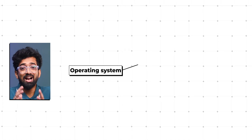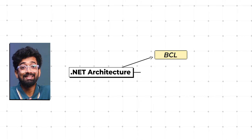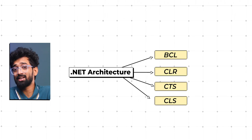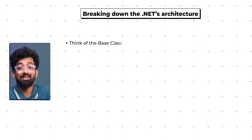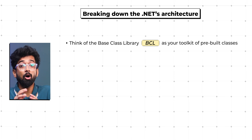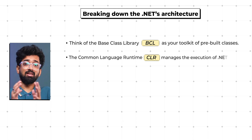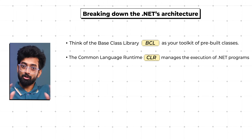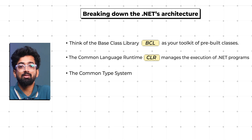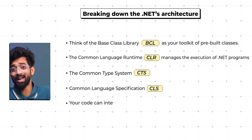Not being limited to just one operating system brings flexibility and reach. Now, breaking down the .NET architecture: think of the Base Class Library (BCL) as your toolkit of pre-built classes. The Common Language Runtime (CLR) manages the execution of .NET programs, making sure everything runs smoothly. The Common Type System (CTS) and Common Language Specification (CLS) ensure your code can interact seamlessly with other .NET languages.